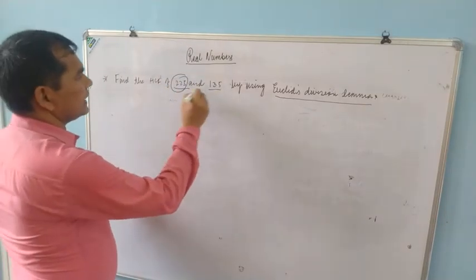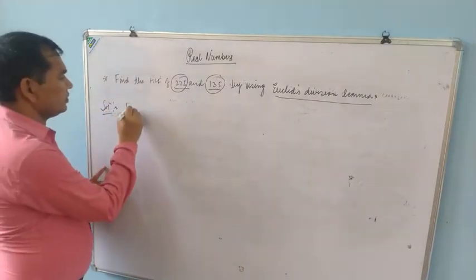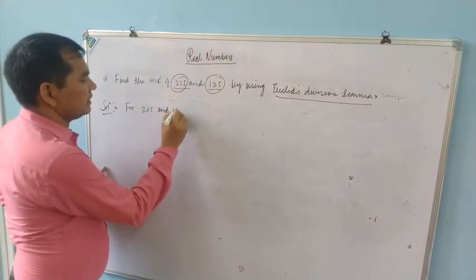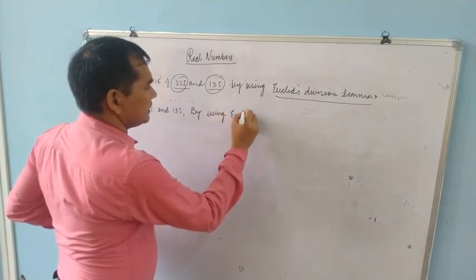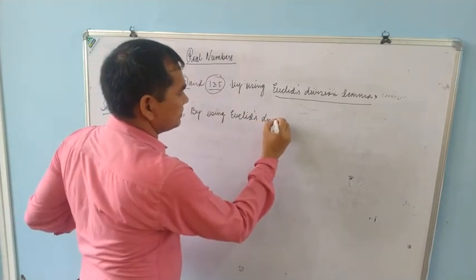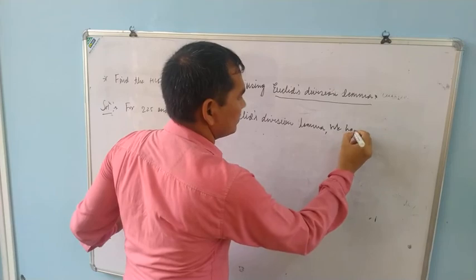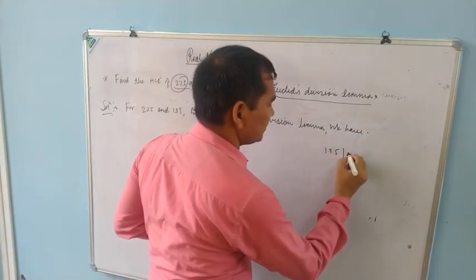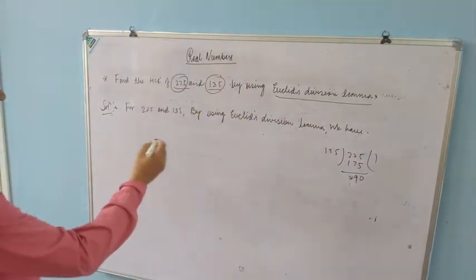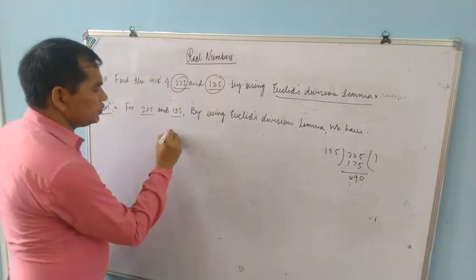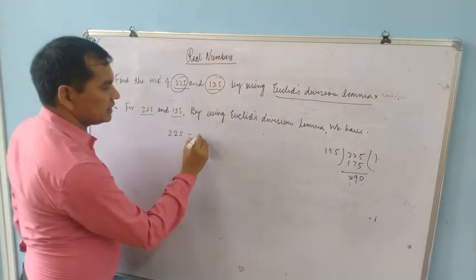To find the HCF of 225 and 135 using Euclid's Division Lemma: we divide 225 by 135. 135 goes 1 time into 225, giving 135 × 1 = 135, and remainder = 225 − 135 = 90. So we can write 225 = 135 × 1 + 90, following the form A = BQ + R.